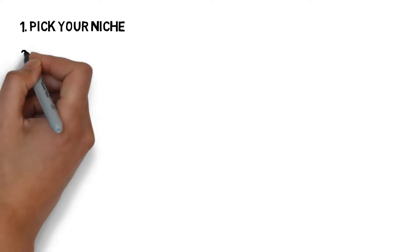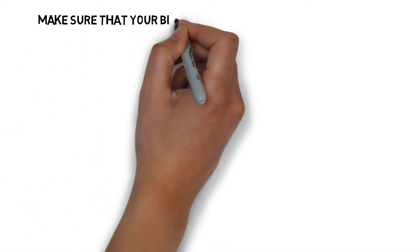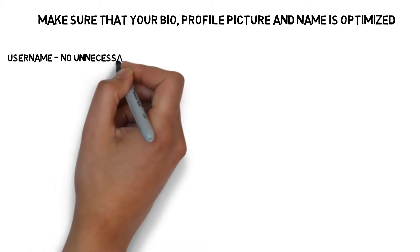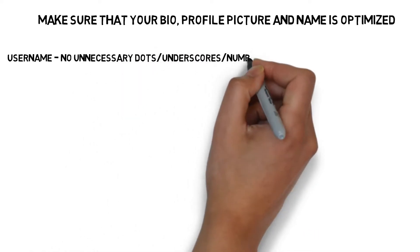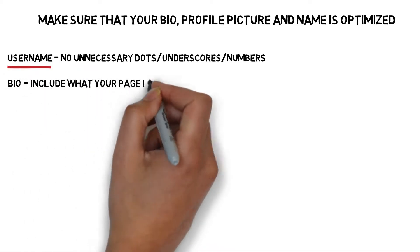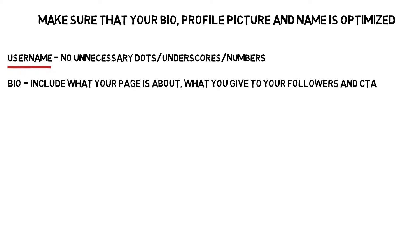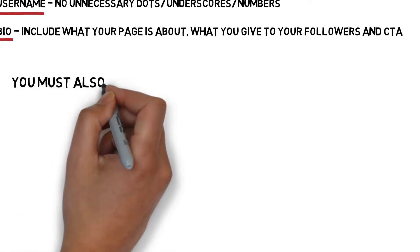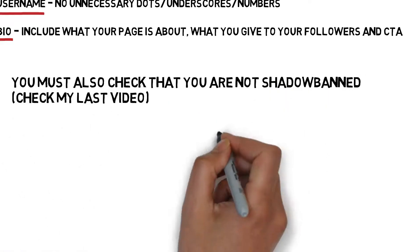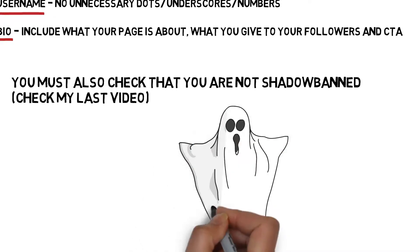The second step is to check and optimize your page. You need to make sure your profile picture, username, and bio are high-converting and related to your niche. For your username, keep it as clean as possible with no unnecessary dots, underscores, or numbers. Your bio is a key point — include what the page is about and add a CTA, or call to action. Also, before going viral, make sure you aren't shadow banned, because if you are, getting your page viral will be close to impossible.